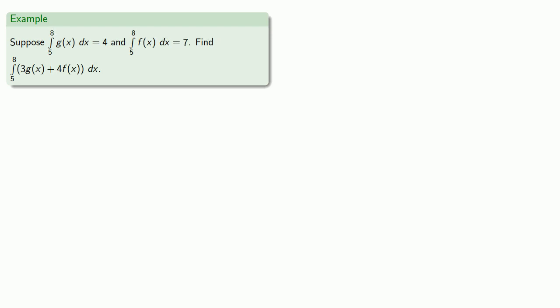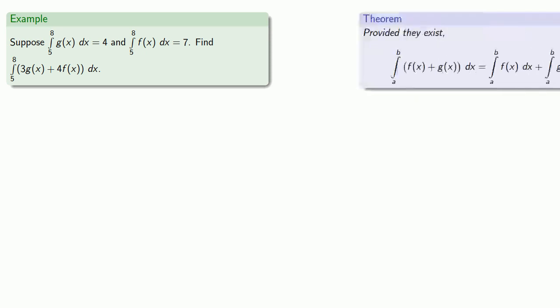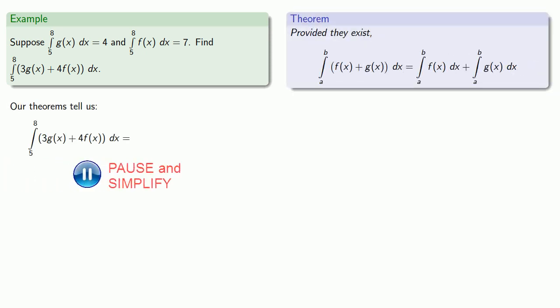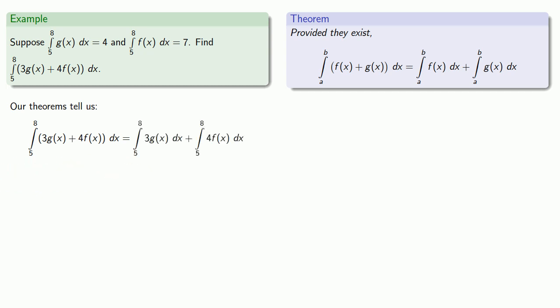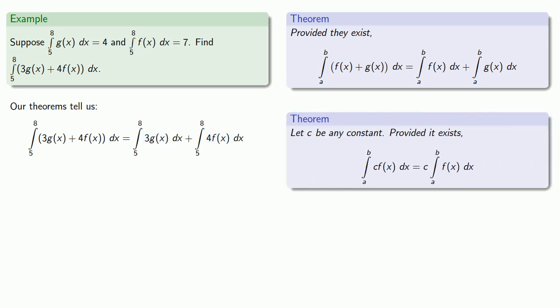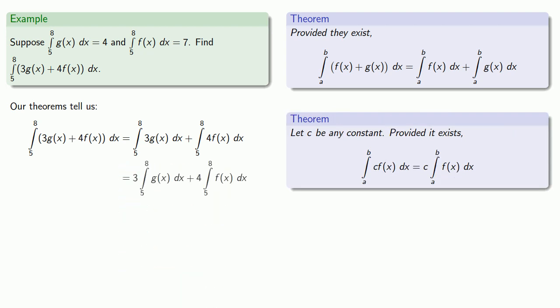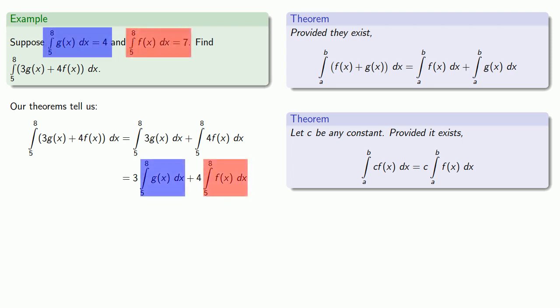Or we could get fancier. As with differentiation, it's convenient to identify the type of integrand we have. Here our integrand is a sum, so we'll pull in our theorem about the integral of a sum, which allows us to break apart our integral. Looking at the individual pieces, these are each a constant times a function, so we use our theorem about the integral of a constant times a function. Finally, we have a collection of integrals whose values we know, so we substitute those in and evaluate our integral.